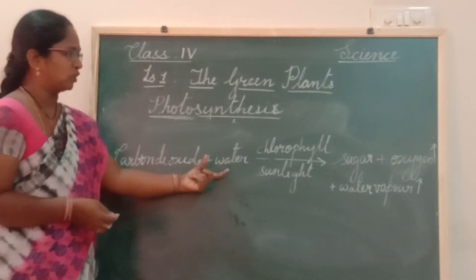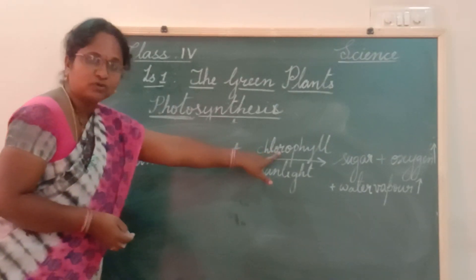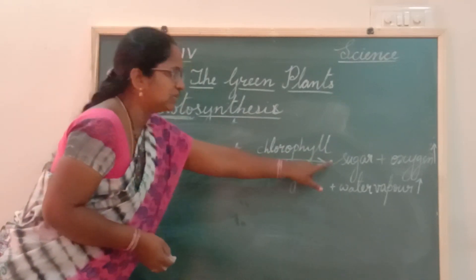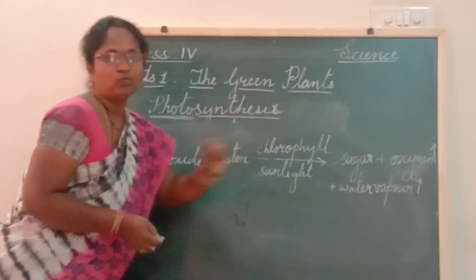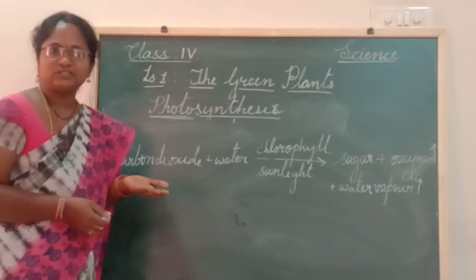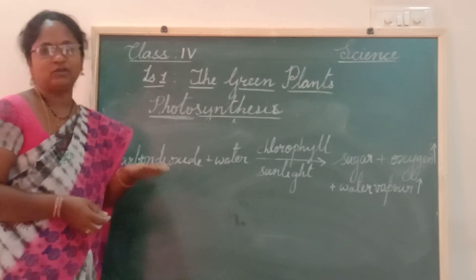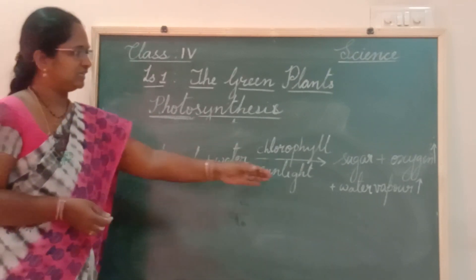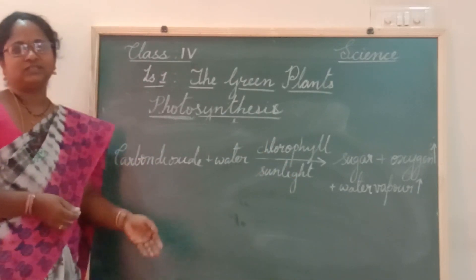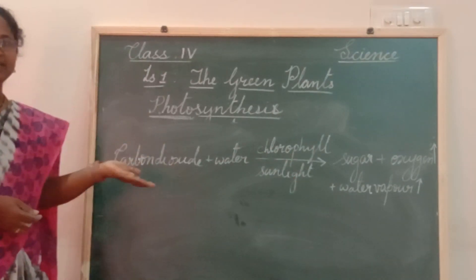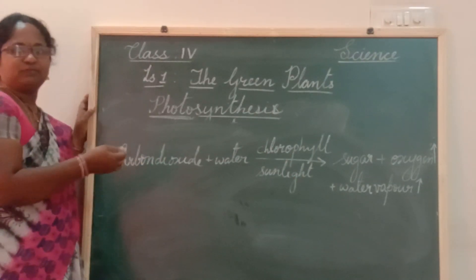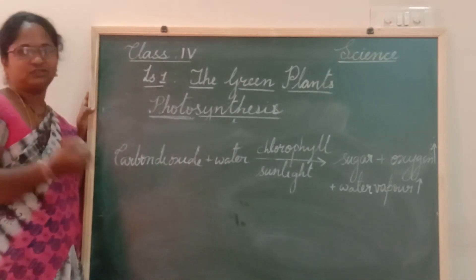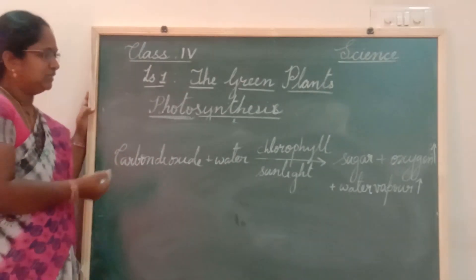Carbon dioxide plus water, in the presence of chlorophyll and sunlight, gives sugar, oxygen, and water vapour. Oxygen is released into the air — all living organisms breathe in oxygen. Water vapour is also released; it evaporates and helps in the formation of clouds.